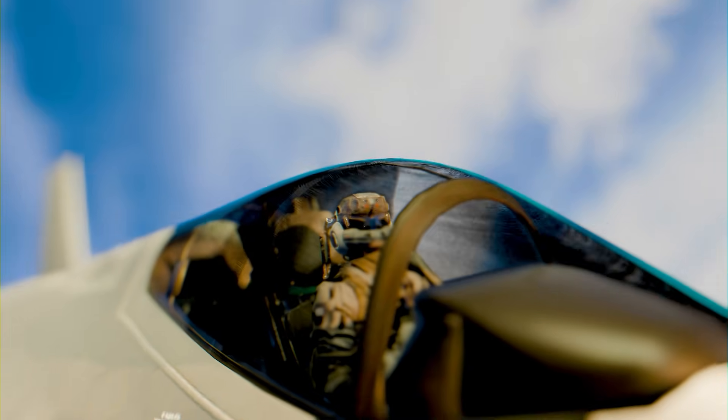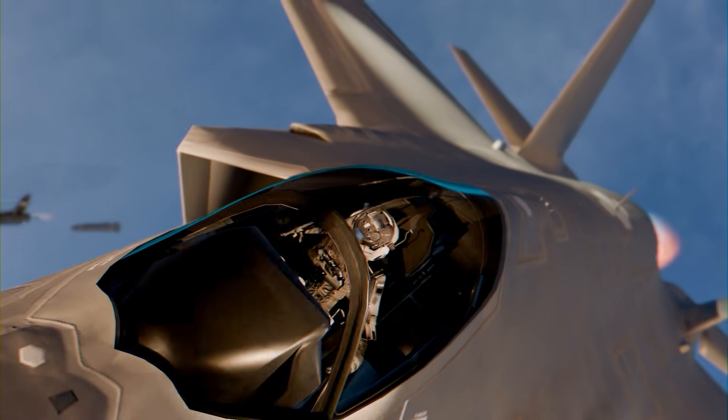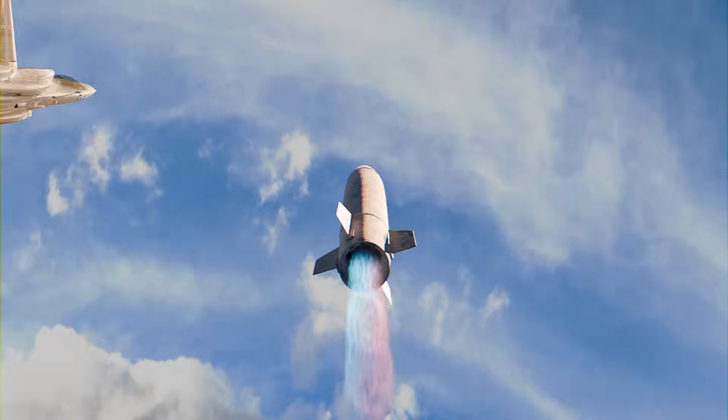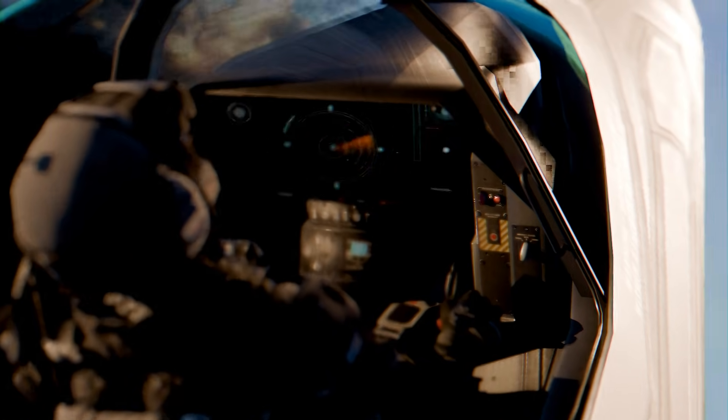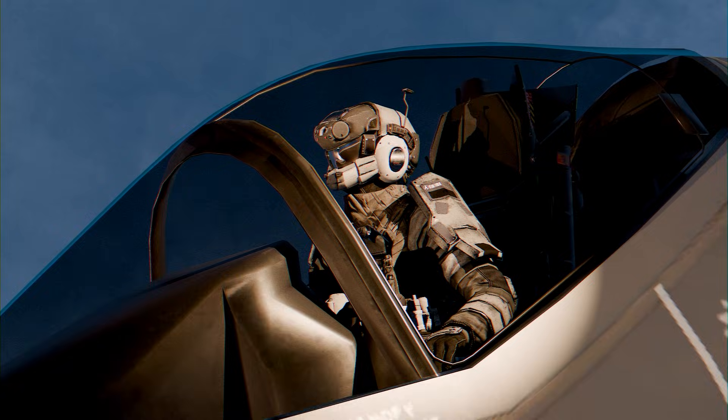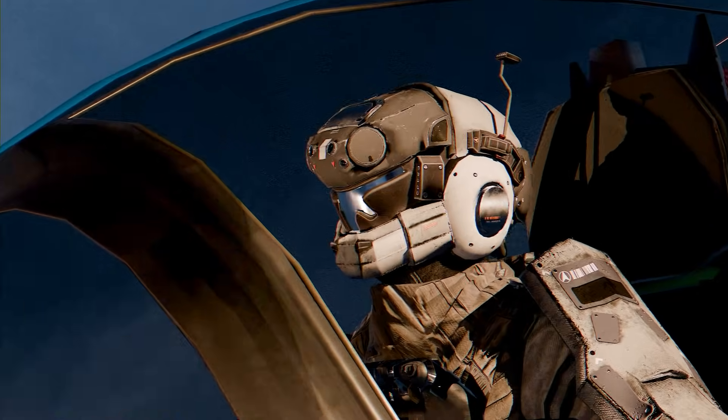He slammed the throttle forward, banking hard left. His jet shuddered under the G-force, but the enemy stayed on him. Smart missiles adapting to every move. His hands hovered over the flight console, eyes locked on a small black and yellow switch guarded under a flip cover. He hesitated. Using it meant revealing a classified weapon to the world.